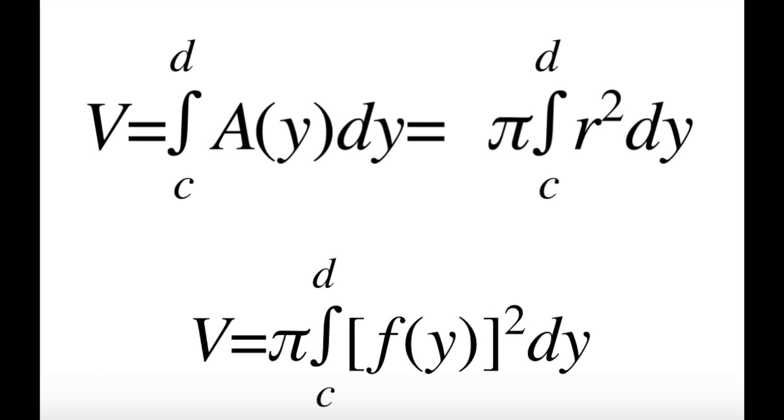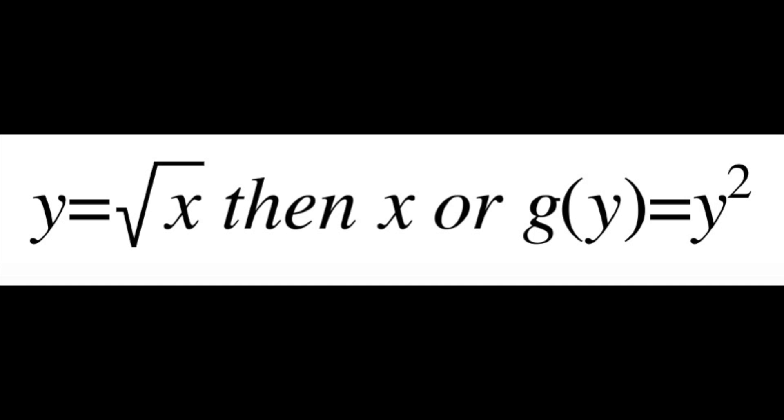Similarly, if our axis of rotation is the y-axis, then our function will have to be in terms of y. For example, given we have the function y equals square root of x, then x or g(y) will equal y squared.